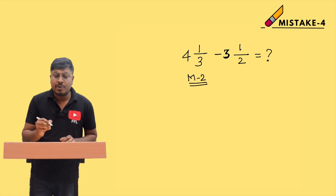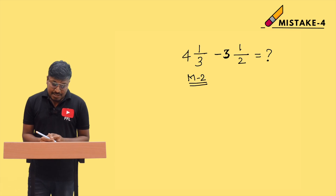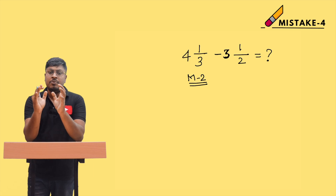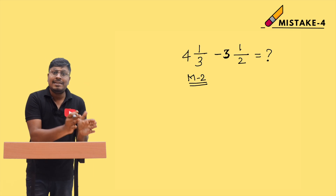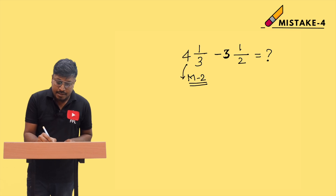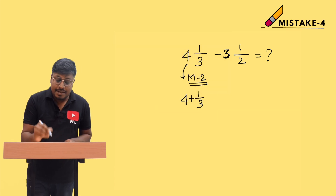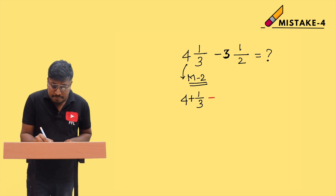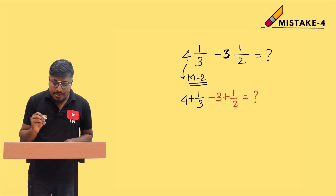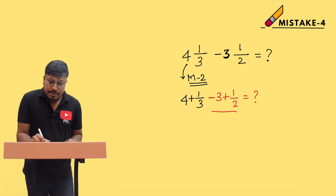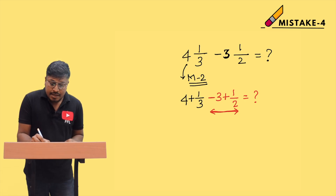Students make mistakes specifically in method number 2. In this method, the mixed fraction 4 and 1/3 is separated into an integer and a fraction: 4 plus 1/3. The mistake occurs with the next term: minus 3 and 1/2. Students incorrectly write this as minus 3 plus 1/2. This is completely wrong.